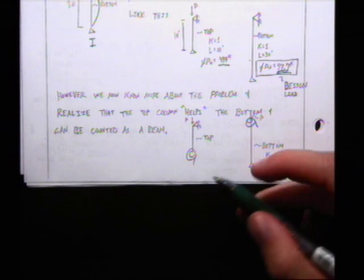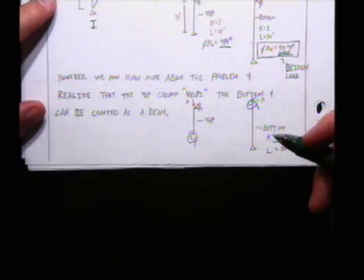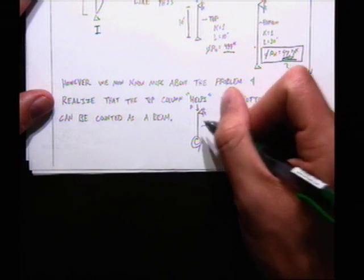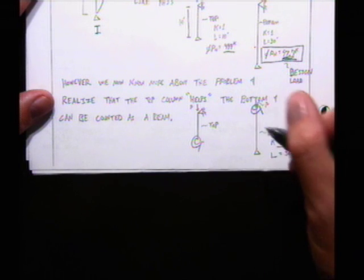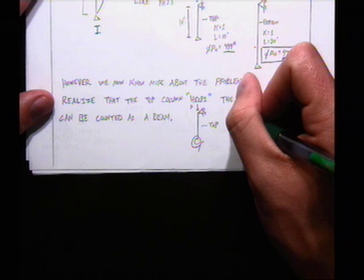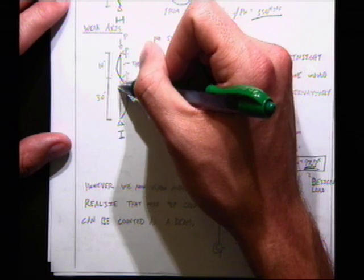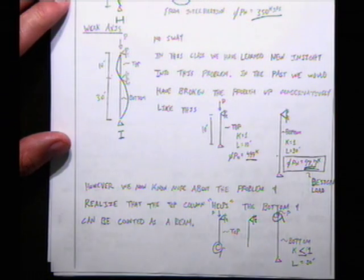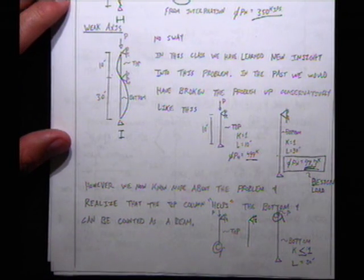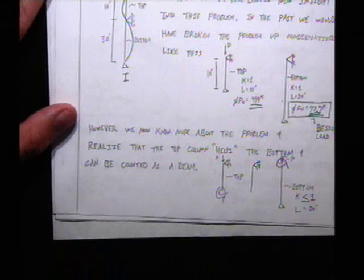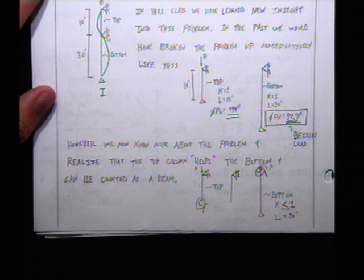The top column can help the bottom and act as a restraining member — like a rotational spring at the top for the bottom column. There is stiffness in the moment transfer between the two. The top will donate as much extra stiffness as it can to the bottom, but it will always retain enough to hold its own capacity of 499 kips. That's what we need to figure out.